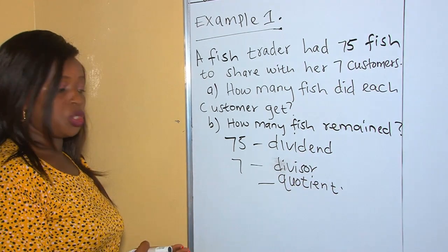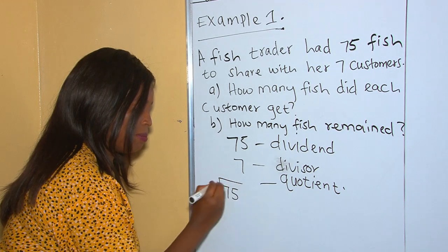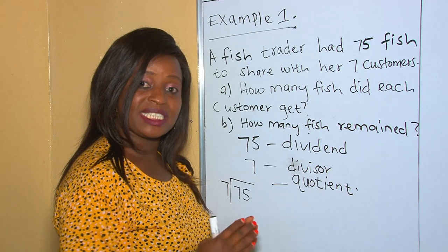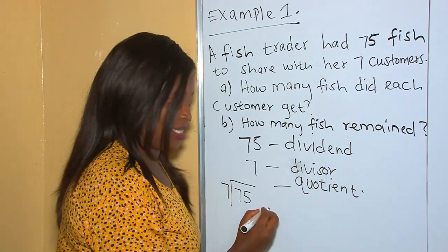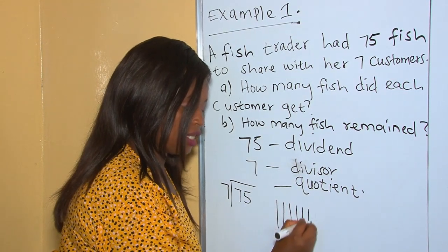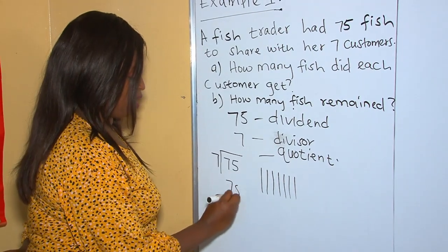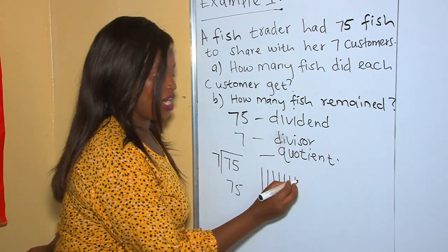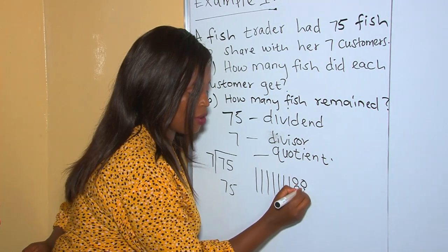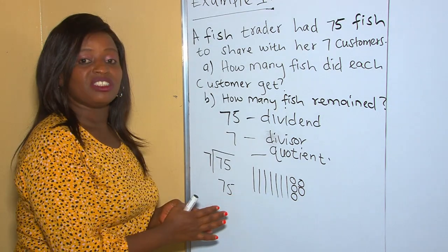So in this question, we have 75 divided by seven. We are going to use bars to represent our tens. There are seven tens: one, two, three, four, five, six, seven. In 75, we have seven tens and five ones, and I want to represent the ones with circles: one, two, three, four, five.